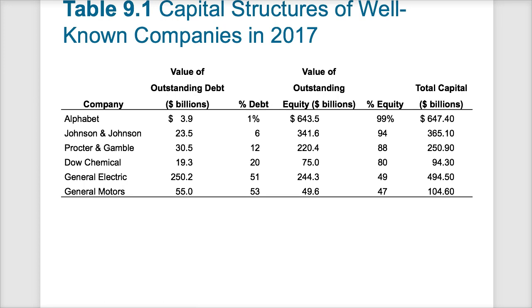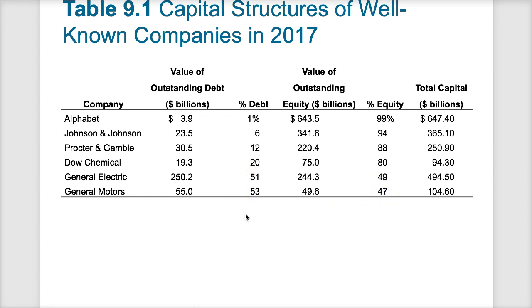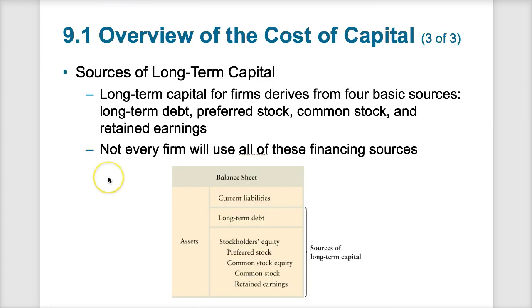Moving forward to capital structures — here are a couple of example companies. Alphabet, which is really Google, lists their debt percentage and equity percentage of company value. Google is mostly stock equity with very little debt. General Motors has 53 percent debt compared to 47 percent equity. GE is the closest to a 50-50 split at about 51 to 49 percent. Those are just some examples of companies' capital structures.